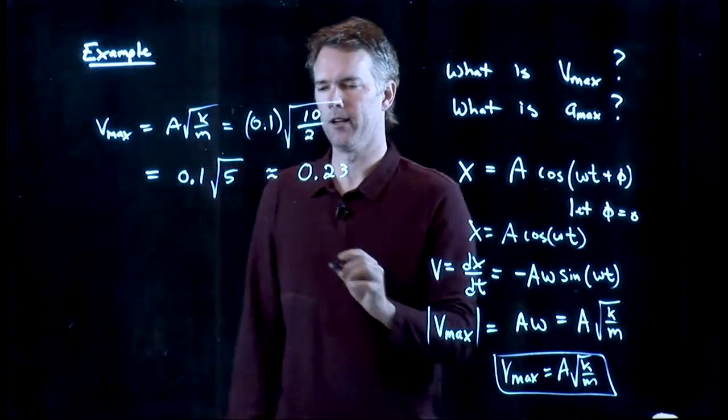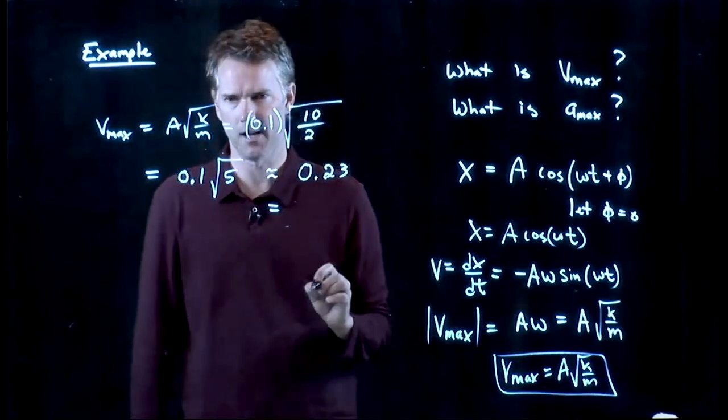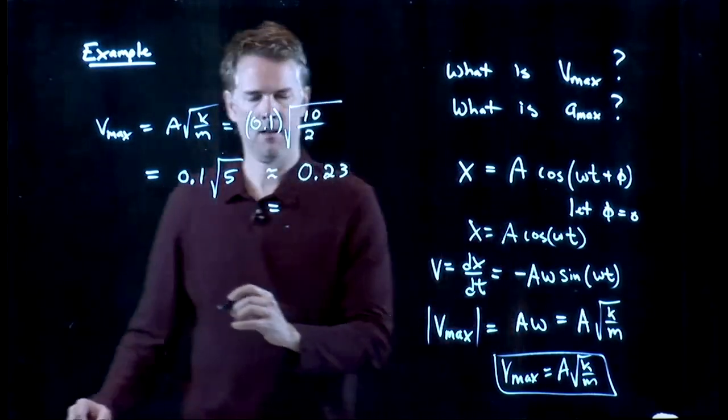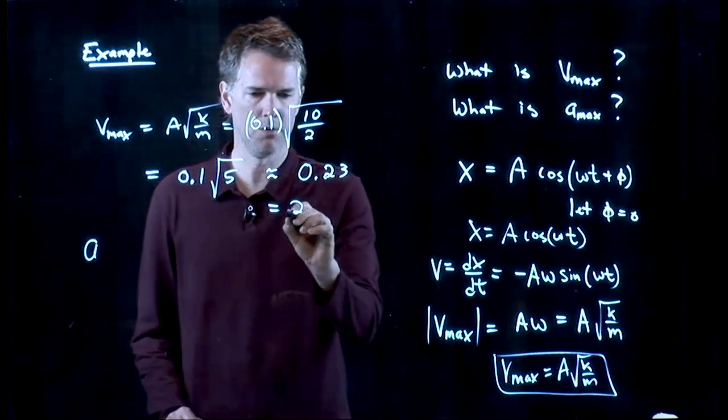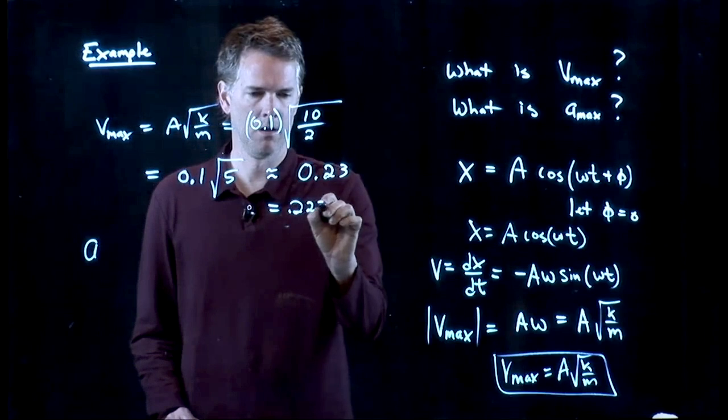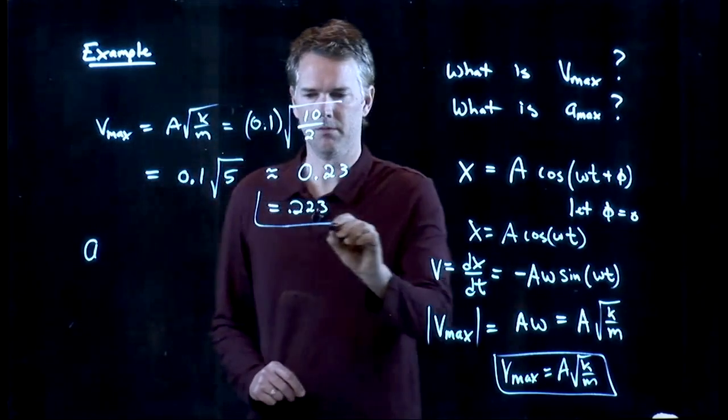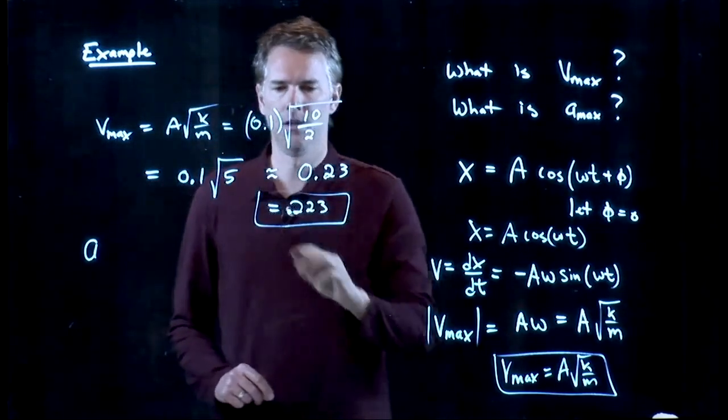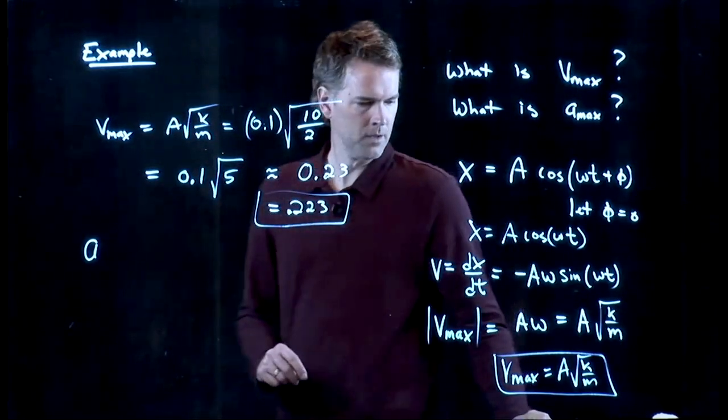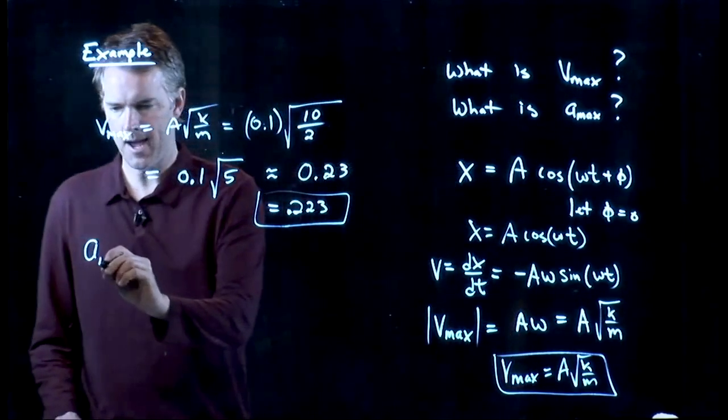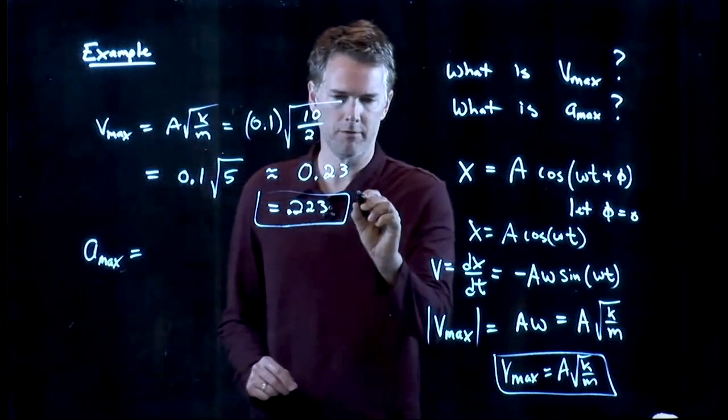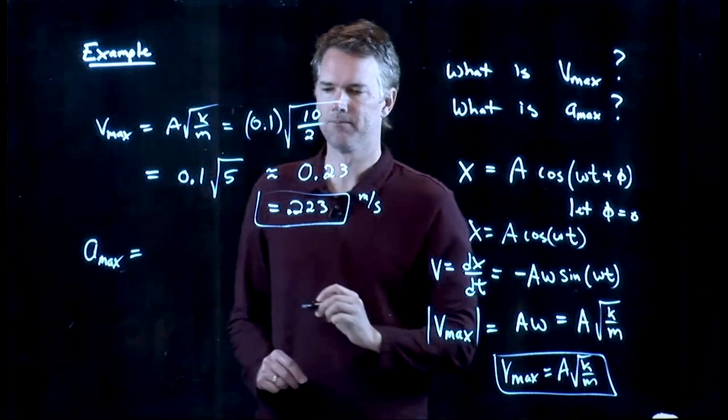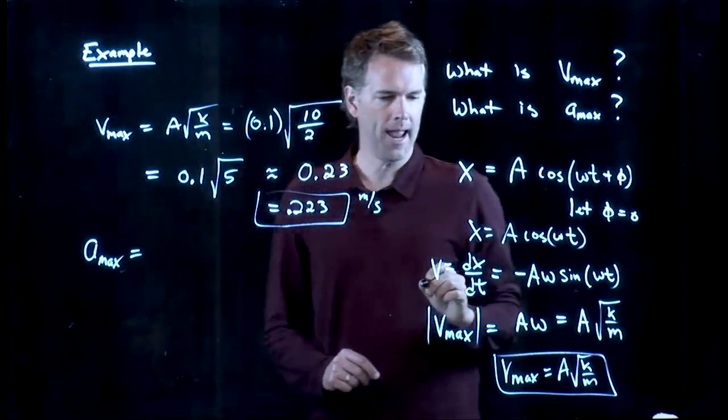And if you run it in your calculator, tell me what you get exactly. 0.223. So we were reasonably close with our guess. 0.223 is the real answer. All right. What about A max? And the units on that are meters per second. What about A max?